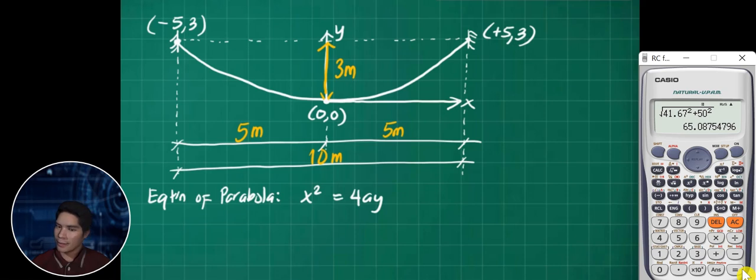The equation of the parabola that opens upward will be x squared equals 4ay. Since we have the point at origin, substitute the point 5 and 3. Therefore, we have 5 squared equals 4a times 3.